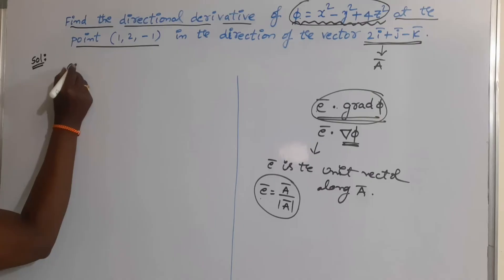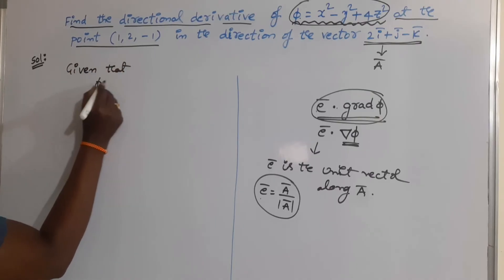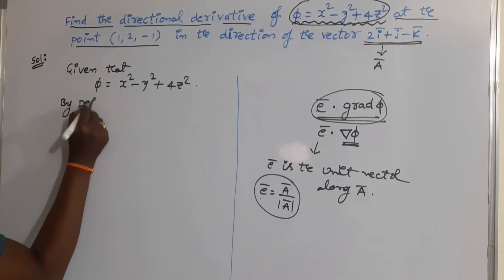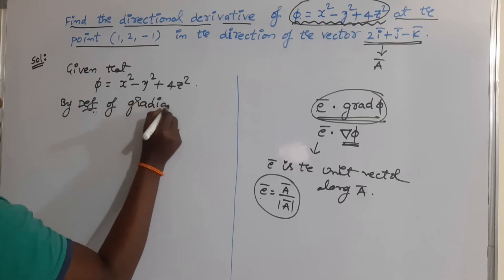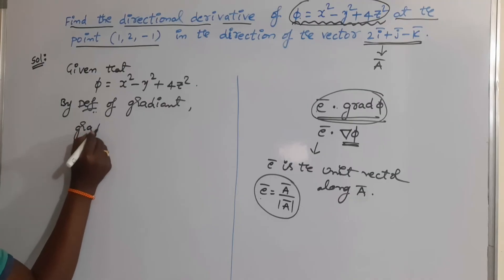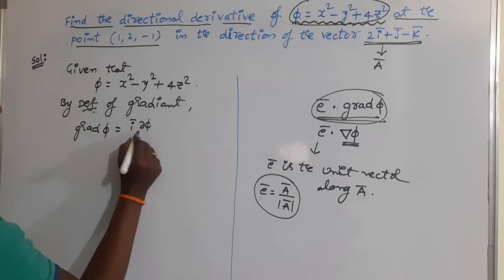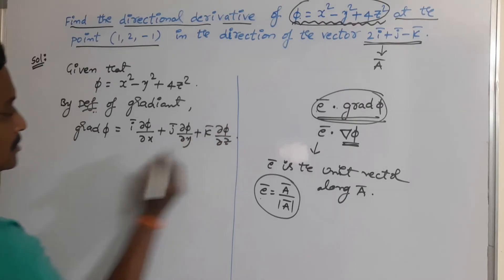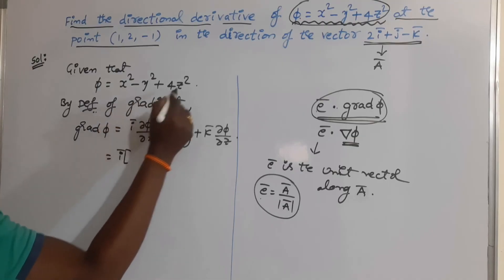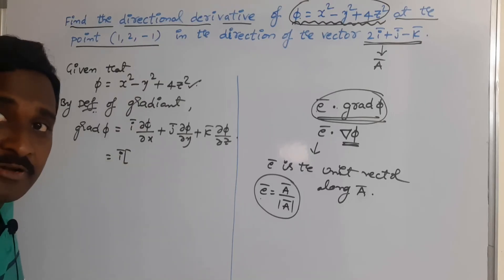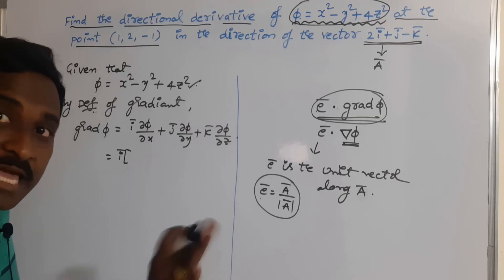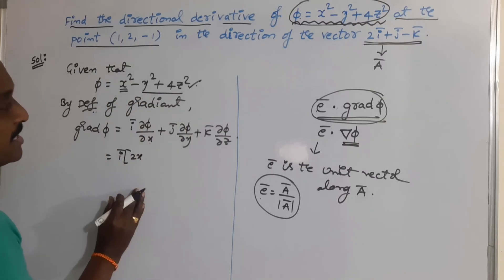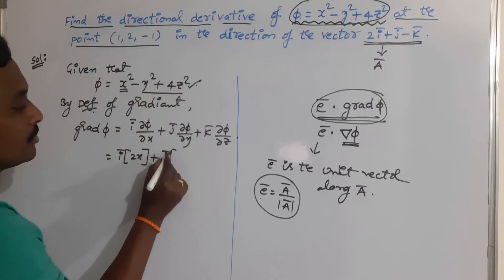See the solution. Given that φ = x² − y² + 4z². By the definition of gradient, grad φ = i · (∂φ/∂x) + j · (∂φ/∂y) + k · (∂φ/∂z). So, i · (∂φ/∂x): taking partial differentiation with respect to x only, except x all remaining terms are constants, so the derivative of x² with respect to x is just 2x.